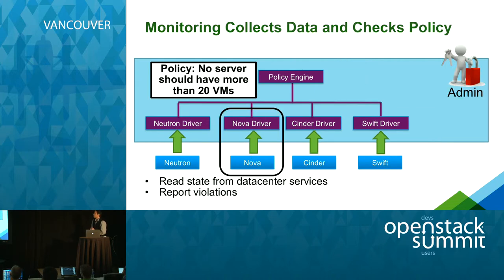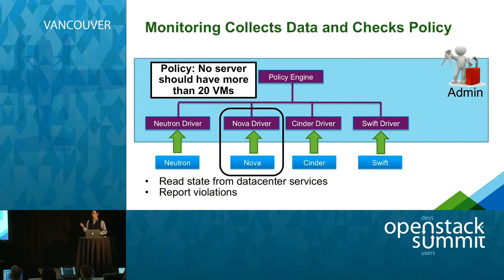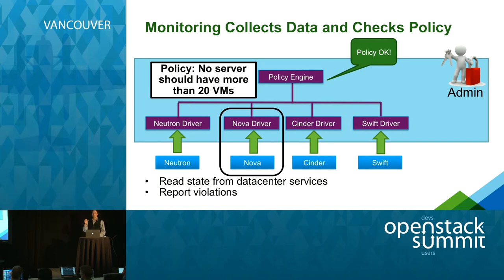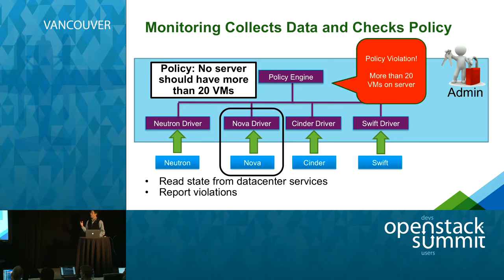Let's go through an example of how monitoring works. Say the policy is: no server should have more than 20 VMs — maybe for latency requirements or quality of service. Congress reads the data it needs from Nova, then the policy engine goes through all those servers, counts the VMs on each, and makes sure it doesn't exceed the limit of 20. Congress will either confirm all policies are okay, or if a server has exceeded the quota, it will flag a policy violation — noting there are more than 20 VMs on that server — and notify the admin who can then go and fix it.